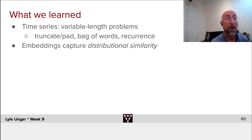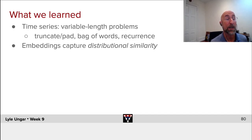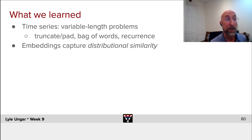We saw that embeddings captured distributional similarity. Words that show up in the same contexts, in the same documents, with the same words before or after them tend to be similar. We will see a variety of different, more sophisticated embeddings next week.